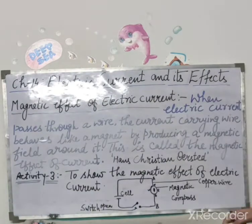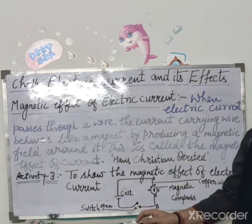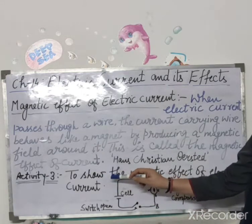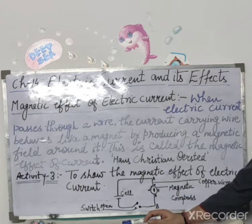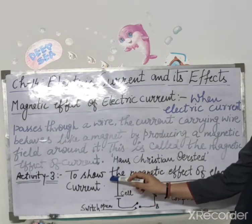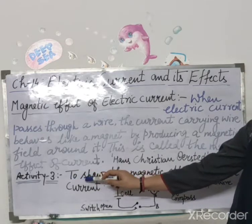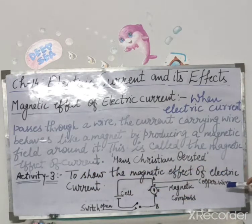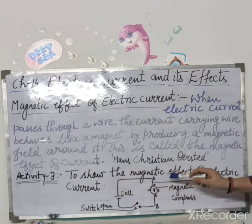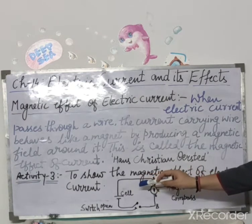Now, aap log magnetic effect ko hi ek activity ke through achhe se samjhenge. Yeh aapki book ki activity hai, page number 131 ki. Thik hai? To aim hai humari is activity ka — to show the magnetic effect of electric current. Ismein magnetic effect electric current ka show karenge.